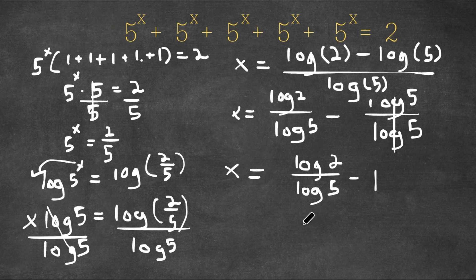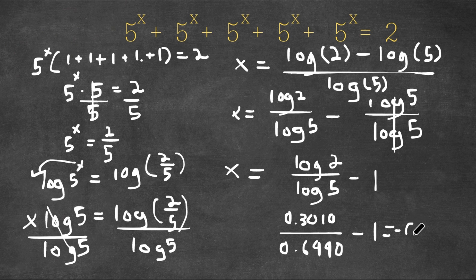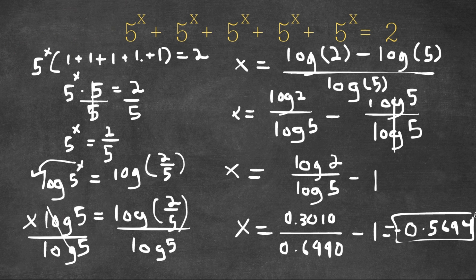Log 2 is approximately 0.3010 and log 5 is approximately 0.6990, and we are subtracting this with 1. This is equal to negative 0.5694. So x is equal to negative 0.5694, and that is our answer.